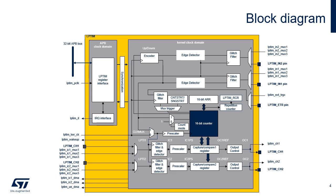The low-power timer is a peripheral split into two separate clock domains. The APB clock domain contains the peripheral's APB interface, while the kernel clock domain contains the low-power timer peripheral core functions. The kernel clock domain can be clocked by internal clock sources or by an external clock source through the timer's LPTIM_IN1 input. The low-power timer peripheral embeds a 16-bit counter fed through a power-of-two pre-scaler, a 16-bit auto reload register, and a 16-bit compare register used to set the period and duty cycle for a PWM waveform output on LPTIM_CH1 or LPTIM_CH2.